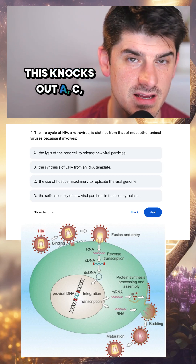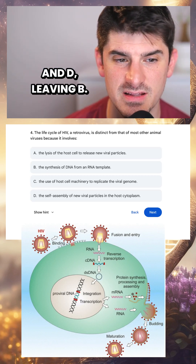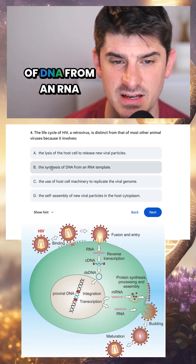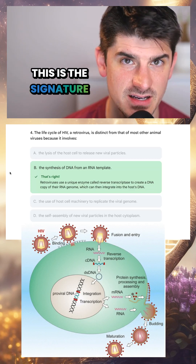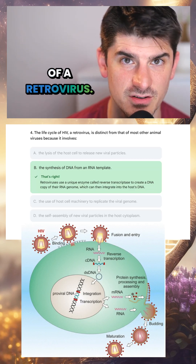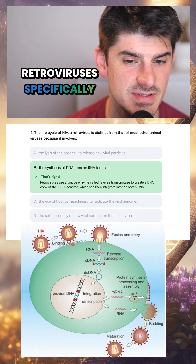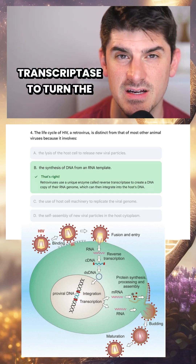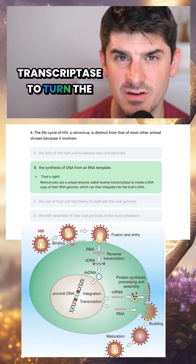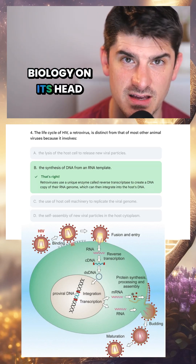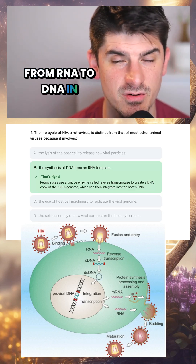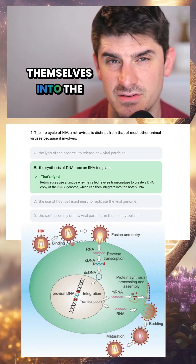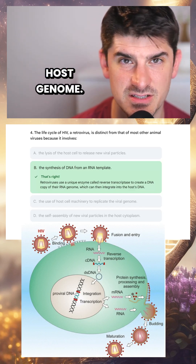This knocks out A, C, and D, leaving B: the synthesis of DNA from an RNA template. And of course, this is the signature of a retrovirus. Retroviruses specifically employ reverse transcriptase to turn the fundamental dogma of biology on its head and go backwards from RNA to DNA in order to insert themselves into the host genome.